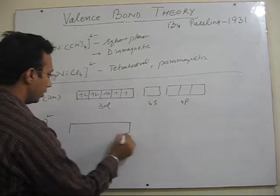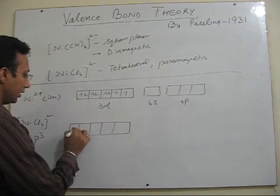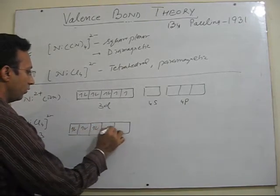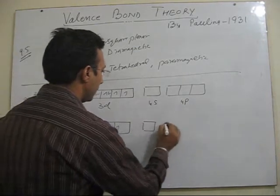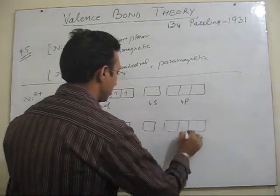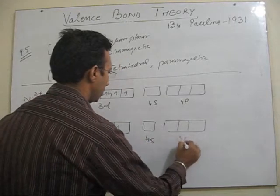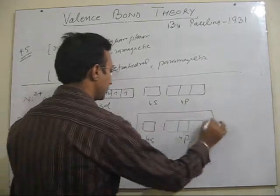So s and all p3 are empty. So no d orbital will be involved in the hybridization and the representation of electrons will remain as such. There will be no change. So s and all p3 will be involved in the hybridization.